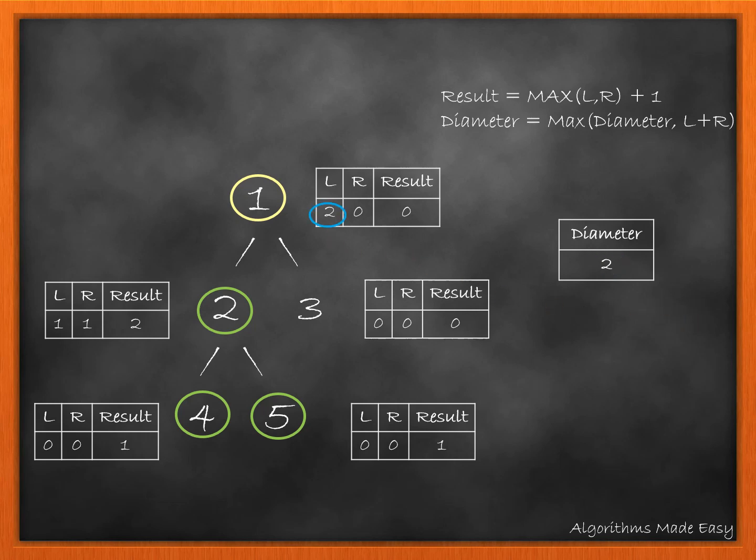The value of L will get updated. Now, we will solve the right subtree of node 1. The value of R will update and so will the value of result, which gives us the final result as 3.